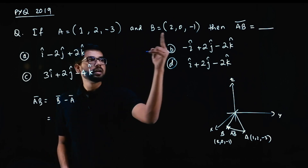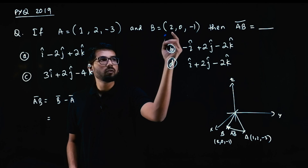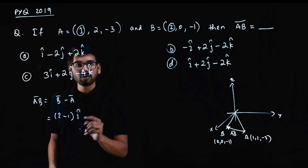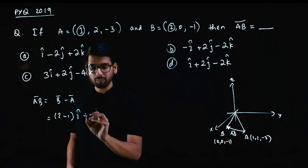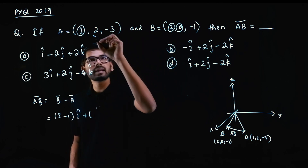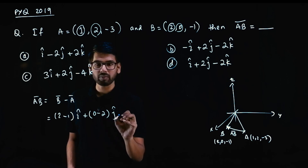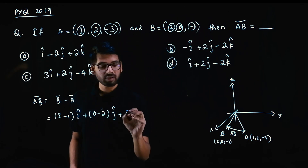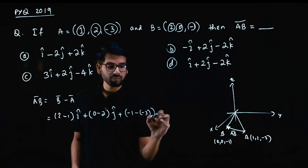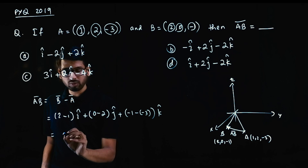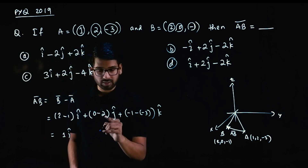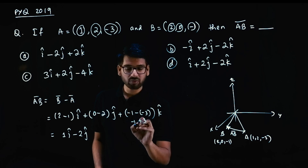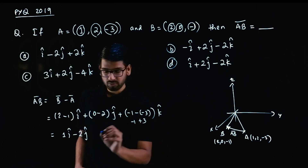B vector is (2, 0, -1) and A is (1, 2, -3). First term minus first term: 2 minus 1 = 1, into i cap. Plus second term minus second term: 0 minus 2 = -2, into j cap. Plus third term: -1 minus (-3) = -1 + 3 = 2, into k cap.